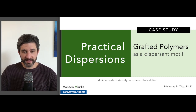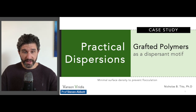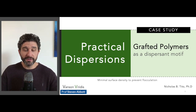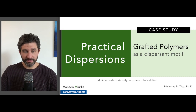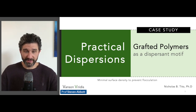In this case study, we examine grafted polymers as a dispersant motif, and the goal is to illustrate how we can use HSPIP to find the minimal required graft density of polymers on the particle surfaces in order to prevent flocculation.